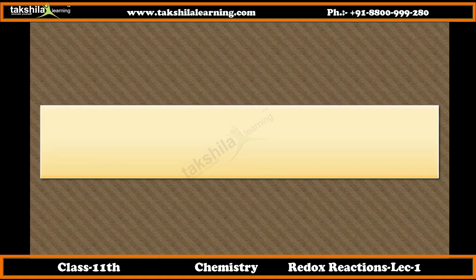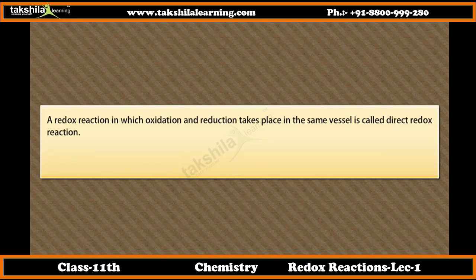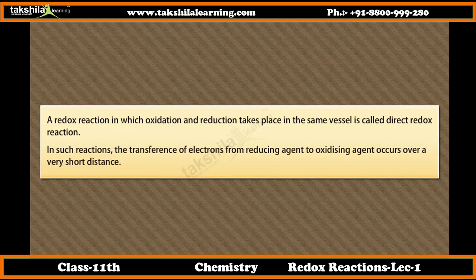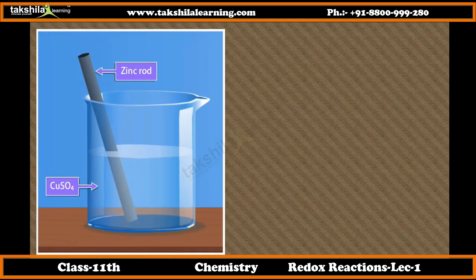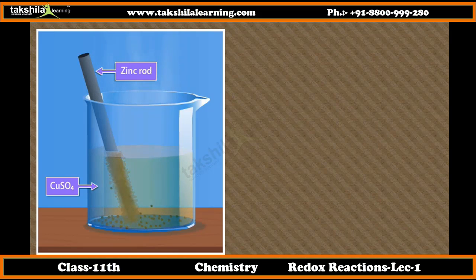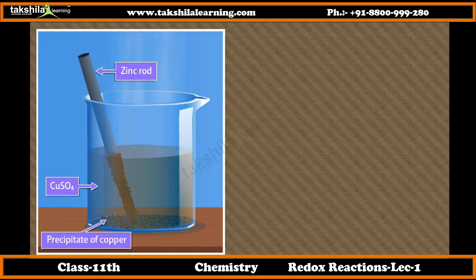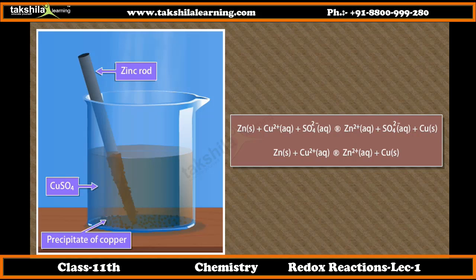A redox reaction in which oxidation and reduction take place in the same vessel is called a direct redox reaction. In such reactions, the transference of electrons from reducing agent to oxidizing agent occurs over a very short distance. For example, if a zinc rod is immersed in copper sulfate solution: the zinc rod starts dissolving and loses mass gradually; the blue color of CuSO4 solution slowly fades; a reddish-brown precipitate of copper settles at the bottom; the reaction takes place with evolution of heat; the solution remains electrically neutral; and the reaction stops after some time.